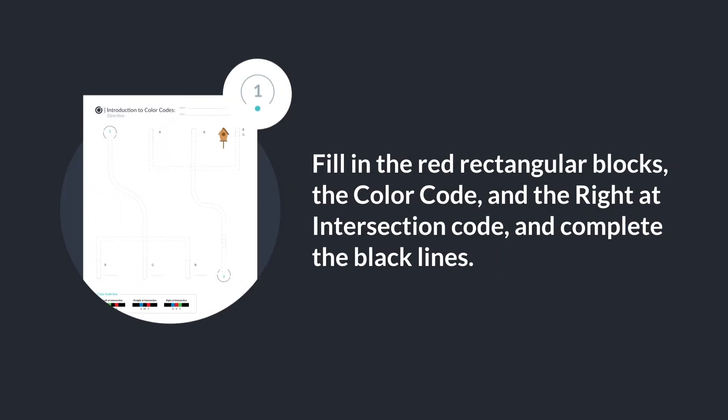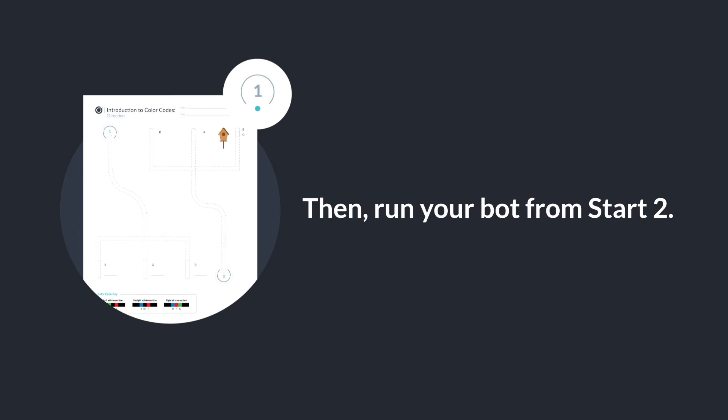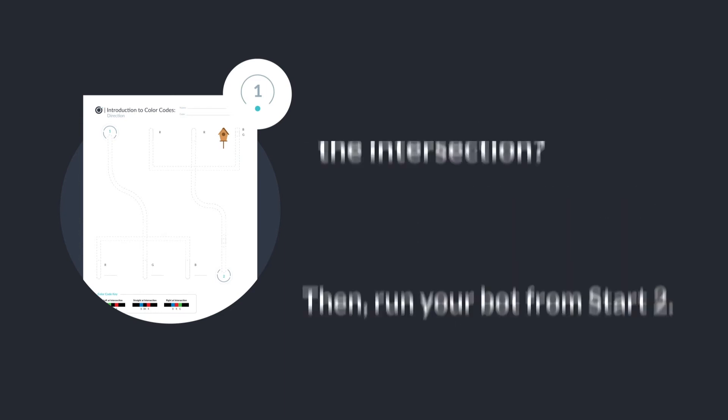Can you fill in the red rectangular blocks and the color code at the line ends? Can you fill in the right at intersection code and complete the black lines? Then run your bot from start two. Did your bot turn right at the intersection?